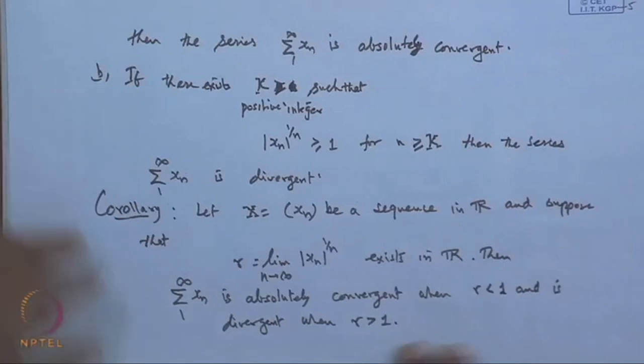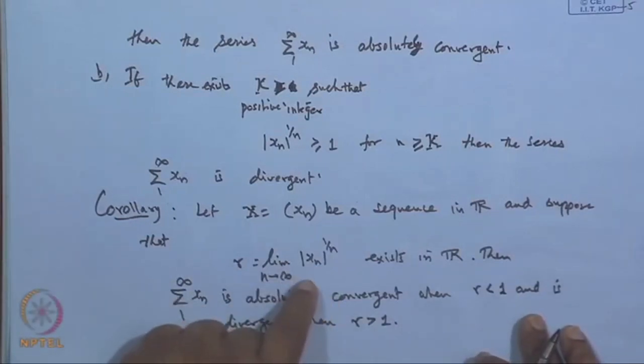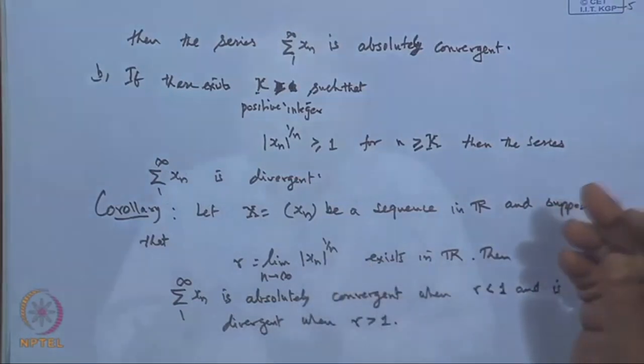For r = 1, we cannot draw any conclusion. For example, taking sigma 1/n gives r = 1 and the series diverges, while sigma 1/n^2 also gives r = 1 but the series converges. So for r equal to 1, the root test is inconclusive.